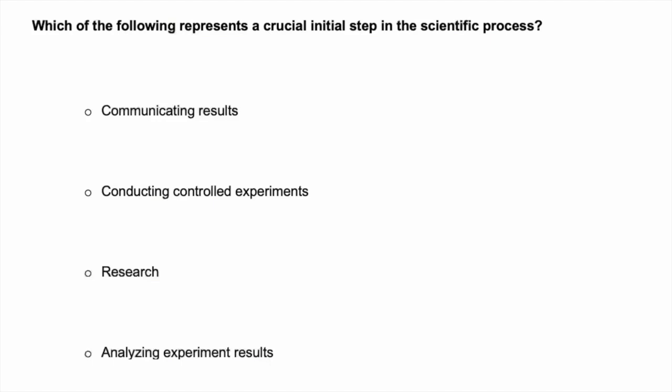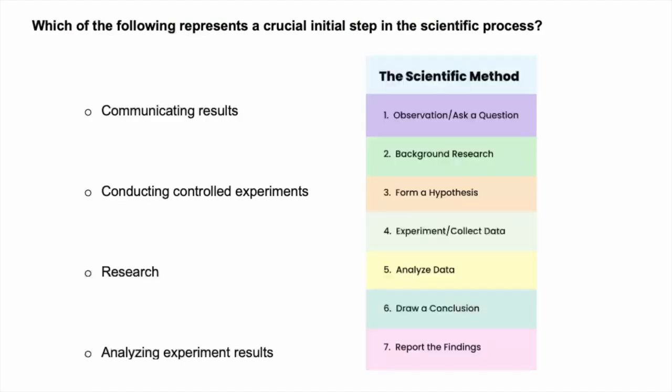Before we answer the question, let's begin by reviewing the scientific process. The scientific process, otherwise known as the scientific method, is a systematic procedure that we use to gain knowledge through observation and experimentation. There are seven steps in the scientific process that must take place in sequential order, beginning with asking a question or making an observation about the world around you, then conducting background research on that topic, before forming a hypothesis, which is a testable if-then statement. Then we will conduct an experiment and collect data. Next, analyze data. Then we can draw a conclusion from that analysis. And finally, we will report the findings.